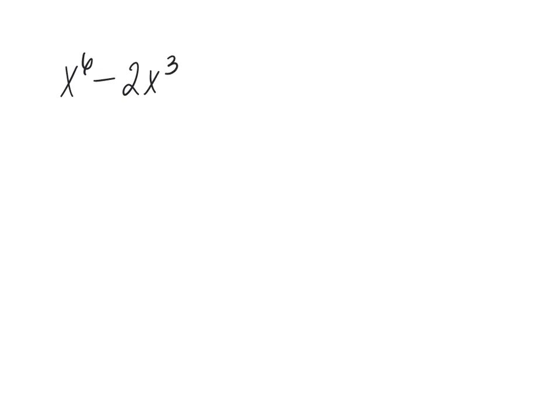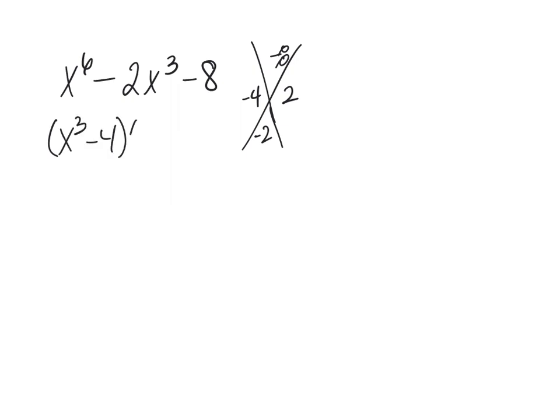How about x to the 6th minus 2x cubed minus 8? This looks like our trinomials again. I have x to the 6th, and half of that exponent is 3, so x cubed. What two numbers multiply to negative 8 and add to negative 2? That's negative 4 and positive 2. So this factors as x cubed minus 4 times x cubed plus 2.